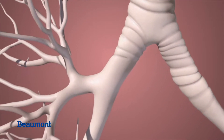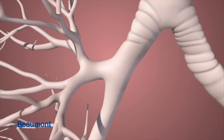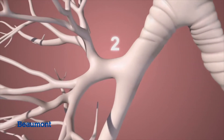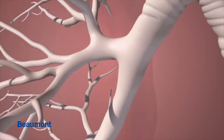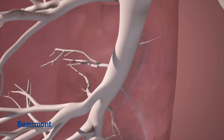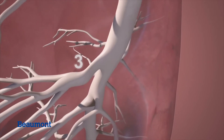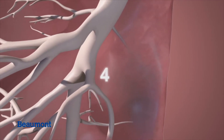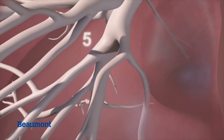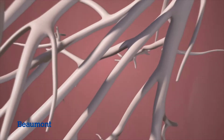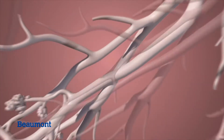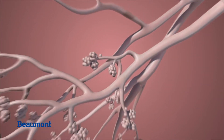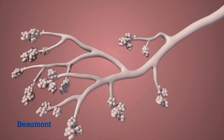The branching continues for more than 16 divisions until it reaches the end air sacs, also known as alveoli. This set of branching bronchial tubes from the trachea, or trunk, to the end air sacs has been likened to a tree.